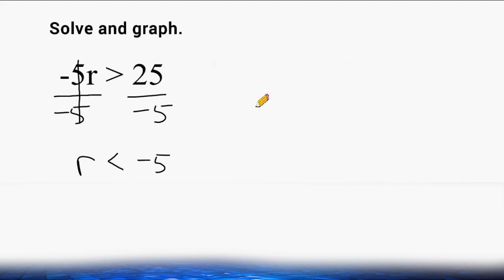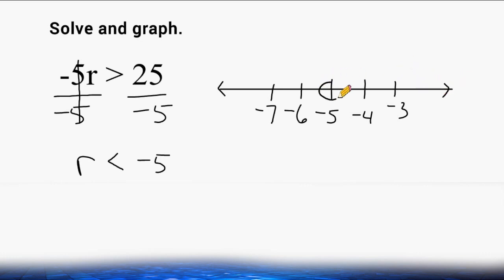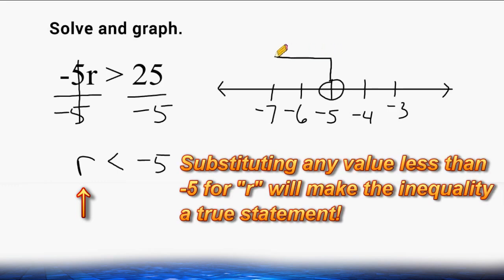Now we have to graph all possible solutions where r is less than negative 5. We put negative 5 right in the middle. In this direction the numbers get larger, so we have negative 4 right here, and negative 3 would be next. Below negative 5, we can put a negative 6 and a negative 7. We draw a point right above negative 5, and we have to leave it hollow because negative 5 is not one of the possible solutions. If there was an equal to as part of our symbol, then we would shade it in. And all of the values less than negative 5 are located to the left of negative 5.